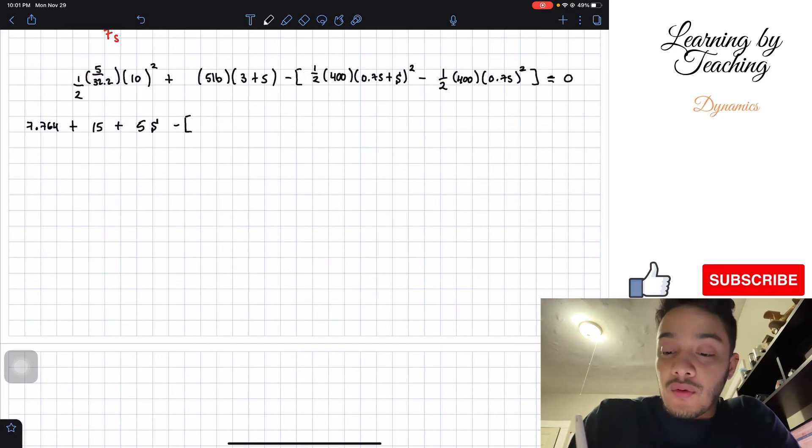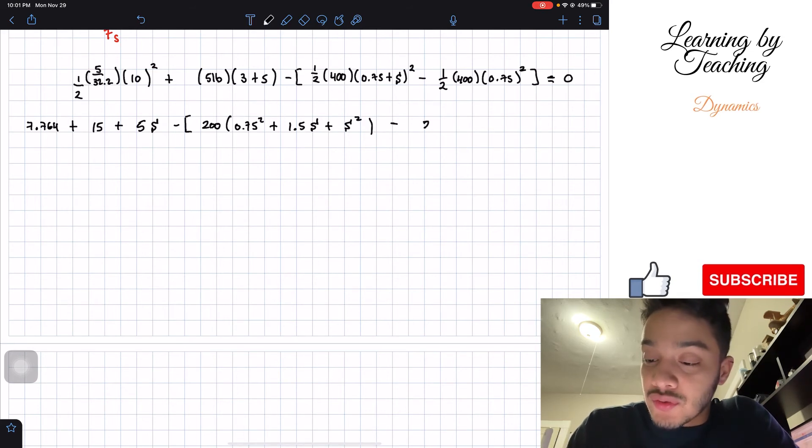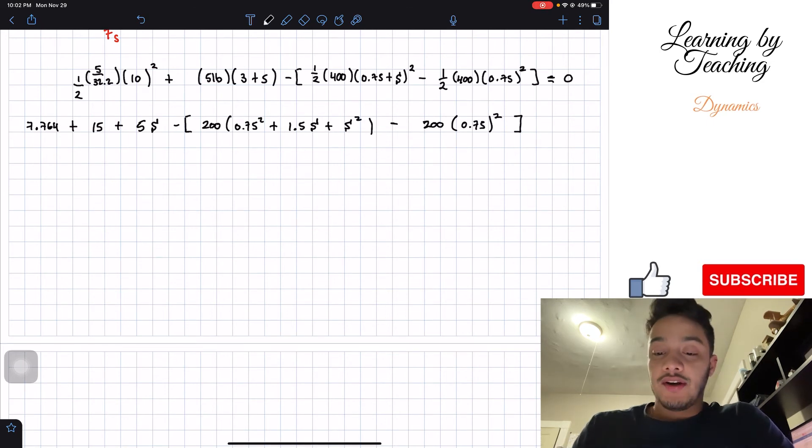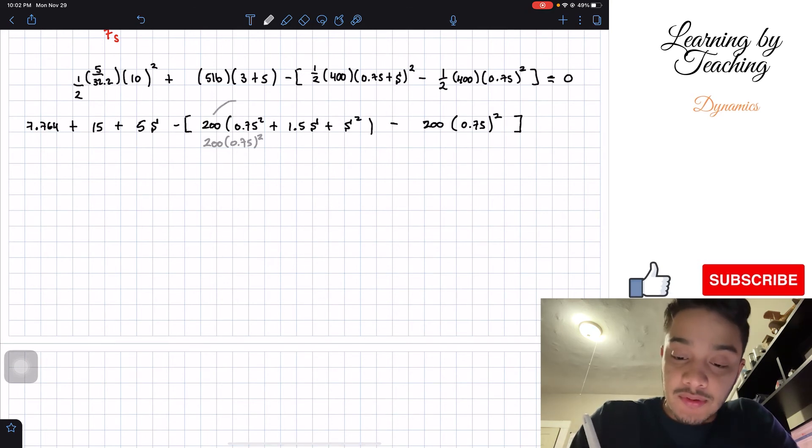We're going to have minus and we're going to open the brackets again. We're going to have 200 when I multiply this one half times 400. 200 multiplied by these two numbers squared, and when we foil that out we'll have 0.75 squared plus 1.5 multiplied by S plus S squared. Then we'll have minus 200 again multiplied by 0.75 squared. Now what we can see is that this is going to be 200 multiplied by 0.75 squared in here, this first multiplication with this one and this one, so this and this will cancel out.